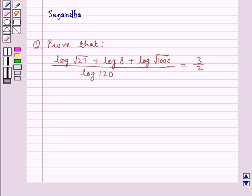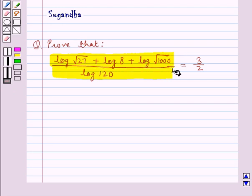Hello and welcome to the session. In this session we discuss the following question: Prove that log of square root 27 plus log 8 plus log of square root 1000, all divided by log of 120, is equal to 3 upon 2.